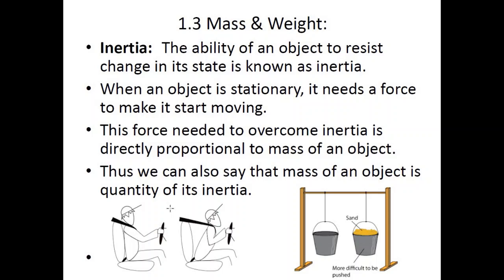The force needed to overcome inertia is directly proportional to the mass of an object. If you have an object with greater mass, you need to apply greater force to stop it or make it move. Thus we can also say that the mass of an object is the quantity of its inertia — or it is a quantitative measure of how much inertia it has.